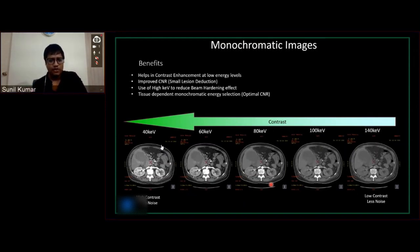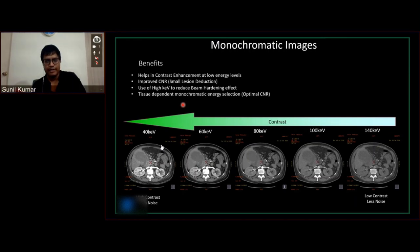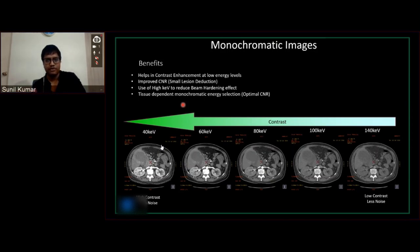Let's see what monochromatic images are and how they're helpful. The benefits include contrast enhancement at low energy — remember the graph where iodine was at its peak at low energy. Improved CNR and contrast-to-noise ratio with small lesions: if you're not able to see a lesion at one particular keV, you can always slide it to increase or decrease. Iodine enhances at lower energy keV. Using high keV will reduce beam hardening effects, especially at the posterior fossa of the brain.